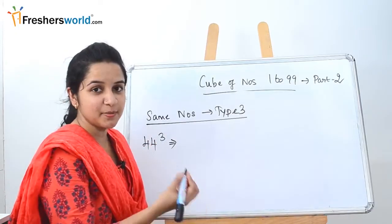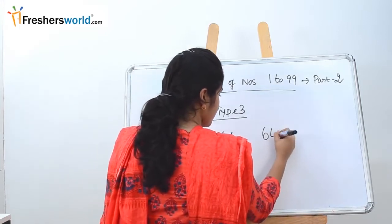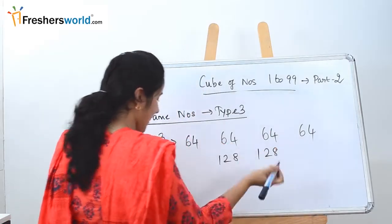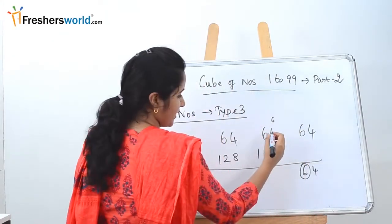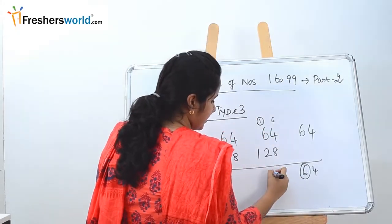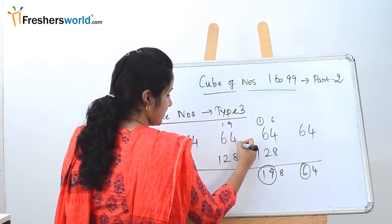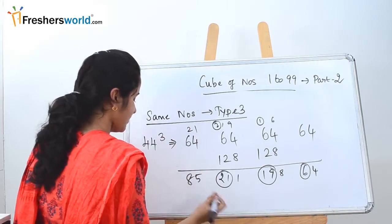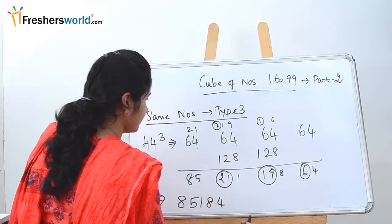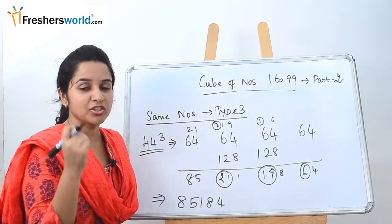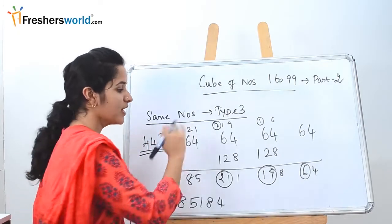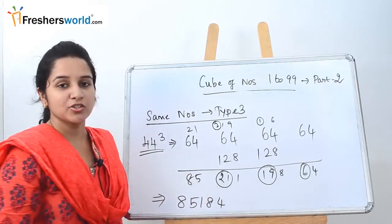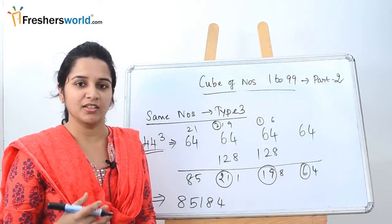Let's solve another Type 3 example: 44 cubed. 4 cubed is 64. Write it across: 64, 64, 64, 64. Multiply middle two digits by 2: 64 × 2 = 128. Place 128 in positions 2 and 3. Add from right to left with carry-overs: 6+4=10, carry 1; 18, 1 carry; 19 carry; 13, 21, 21 carried gives 5 and 8. The answer is 85,184 — so 44 cubed is 85184.